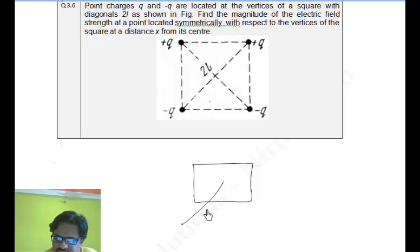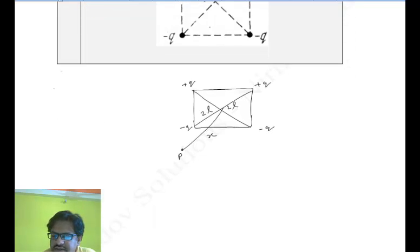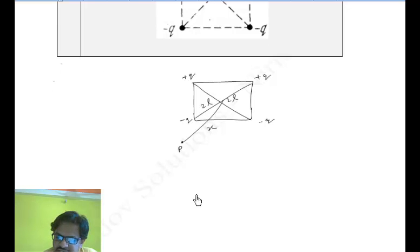This is the distance x, and this is point P at which we have to find the electric field. This is +q, +q, -q, and -q. This distance is given to be 2l, and this is also given to be 2l.